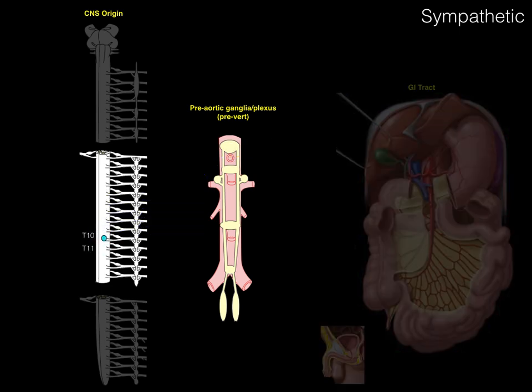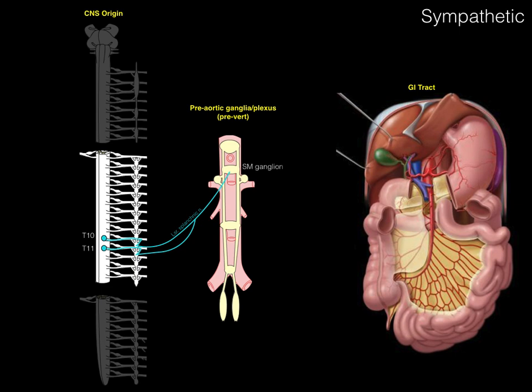At the T10 spinal cord level, a cell body in the lateral horn sends a preganglionic neuron out the ventral root, ventral ramus, white ramus communicans, and via a splanchnic nerve to the superior mesenteric ganglion. The T10 and T11 splanchnics are called the lesser splanchnic nerve. The postganglionic sympathetic neuron in the superior mesenteric ganglion follows arteries out to cause the jejunum, ileum, or colon to decrease peristalsis.